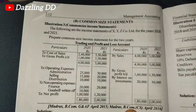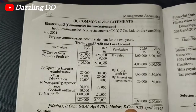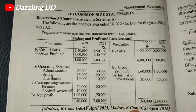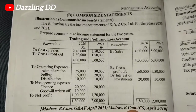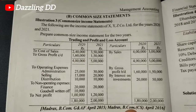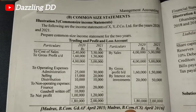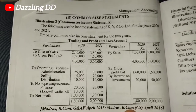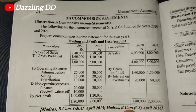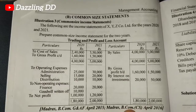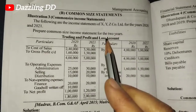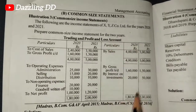Let's talk about a common size income statement. The following are the income statements of XYZ Co Ltd for the years 2020 and 2021. We need to prepare the common size income statement for both years. We will look at the trading and profit and loss accounts.